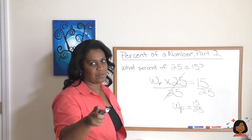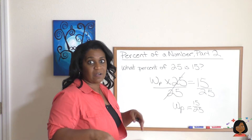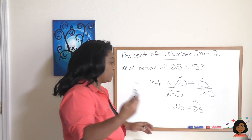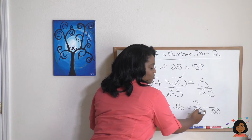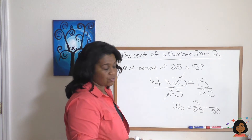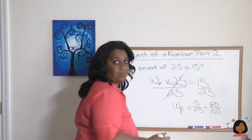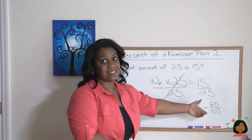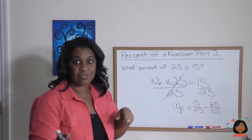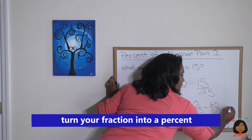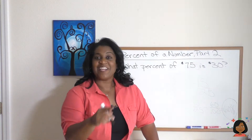Remember, a percent is really a fraction where the denominator is 100. So let's turn 15/25 into an equivalent fraction with a denominator of 100. 25 times 4 is 100, so what you do to the bottom you do to the top: 15 times 4 is 60. So we have 60/100, and a fraction over 100 is the same as dropping the denominator and putting a percent sign — so 60/100 is 60 percent. That's problem number one.